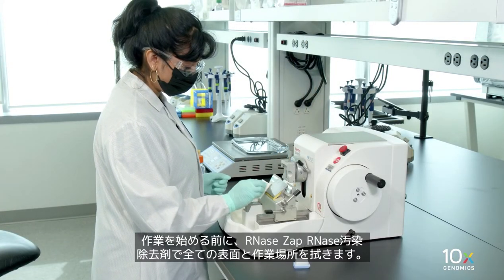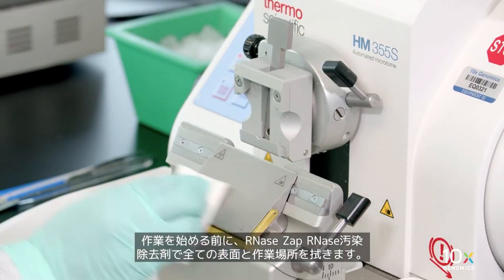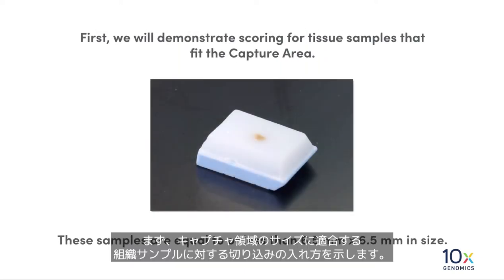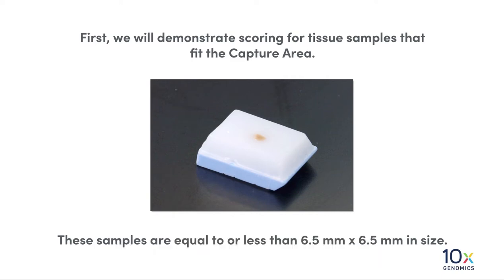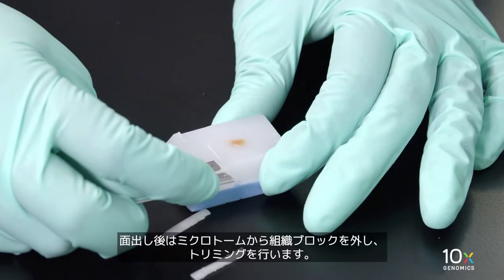Before starting, wipe down all the surfaces and work areas with RNA Zap, an RNA decontaminating solution. The capture area on the Visium spatial gene expression slide measures 6.5 millimeters by 6.5 millimeters. First we will demonstrate scoring for tissue samples that fit the capture area — those equal to or less than 6.5 millimeters by 6.5 millimeters in size after facing.